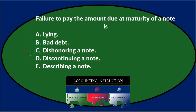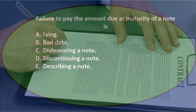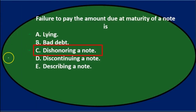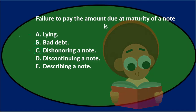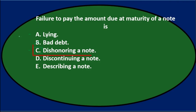Dishonoring the note basically means we promised to pay it and dishonored that promise — we wrote a formal note, said we'd pay it, and didn't. Answer C. Full question and answer: Failure to pay the amount due at maturity of a note is C — Dishonoring a note.